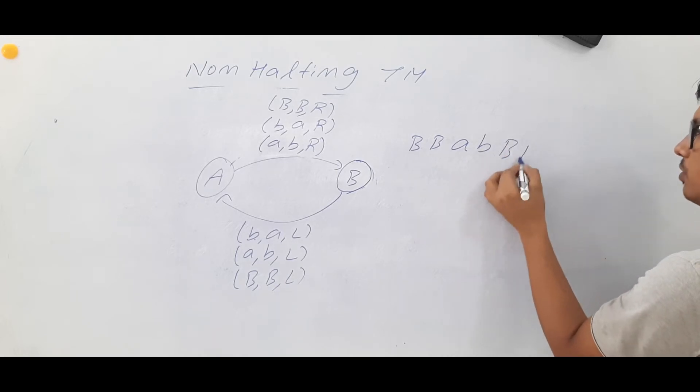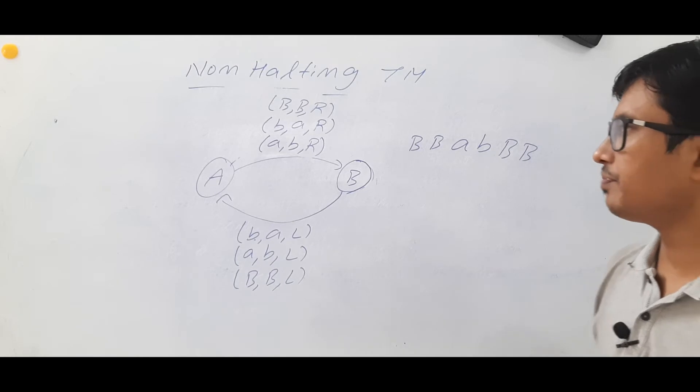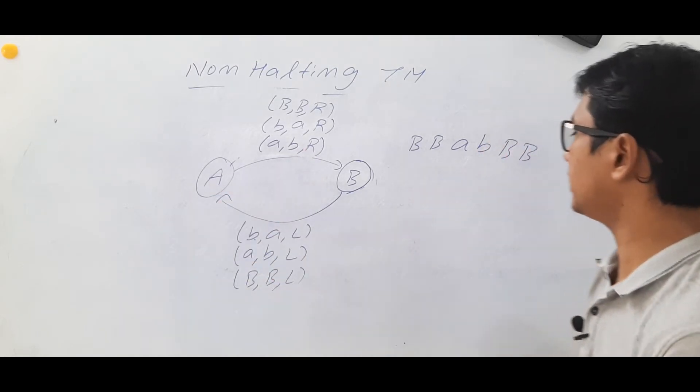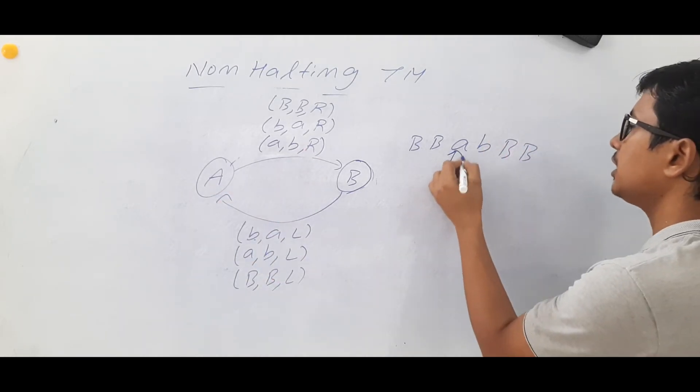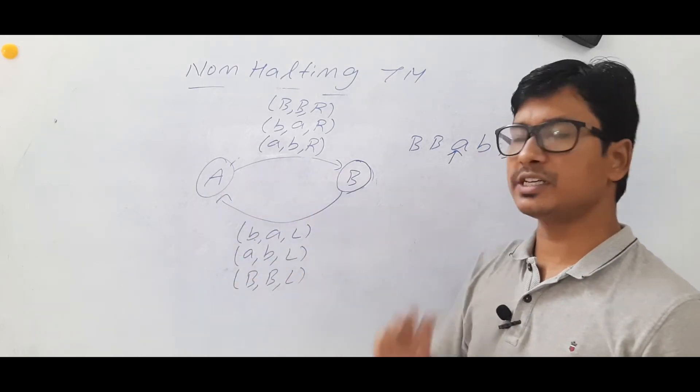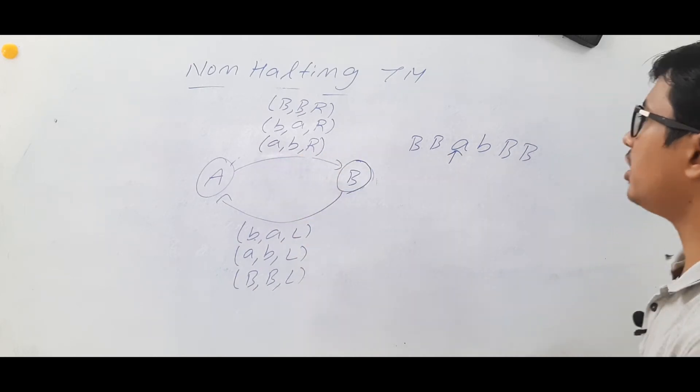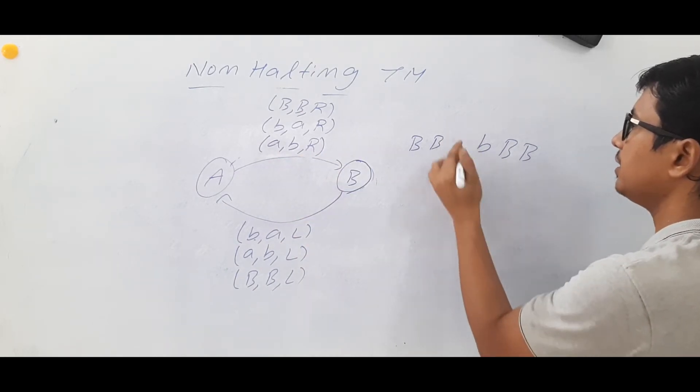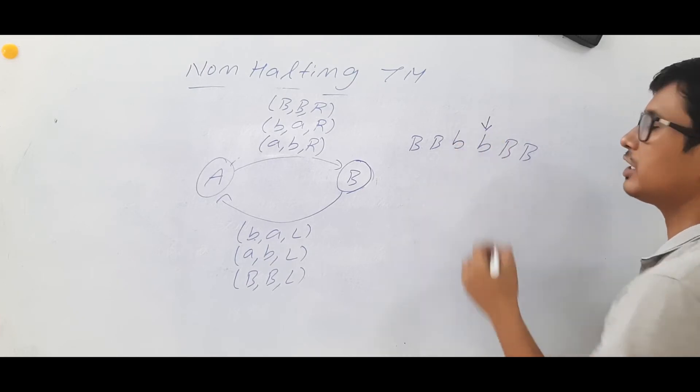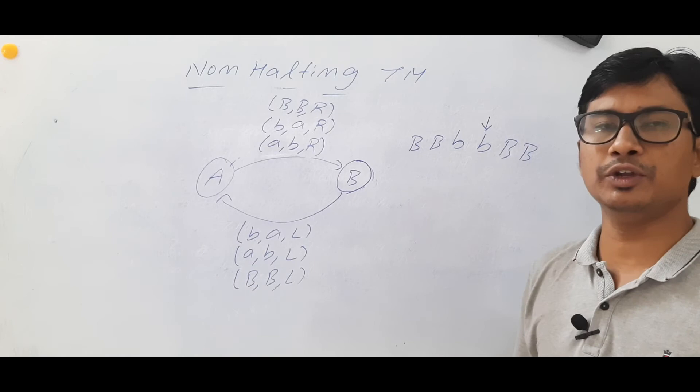I am in state A. Let's say my tape header is pointing to the A. From state A, if I find an A, I modify it to B and move to the right. So the tape head is currently pointing to the small B, and the Turing machine is in state B.